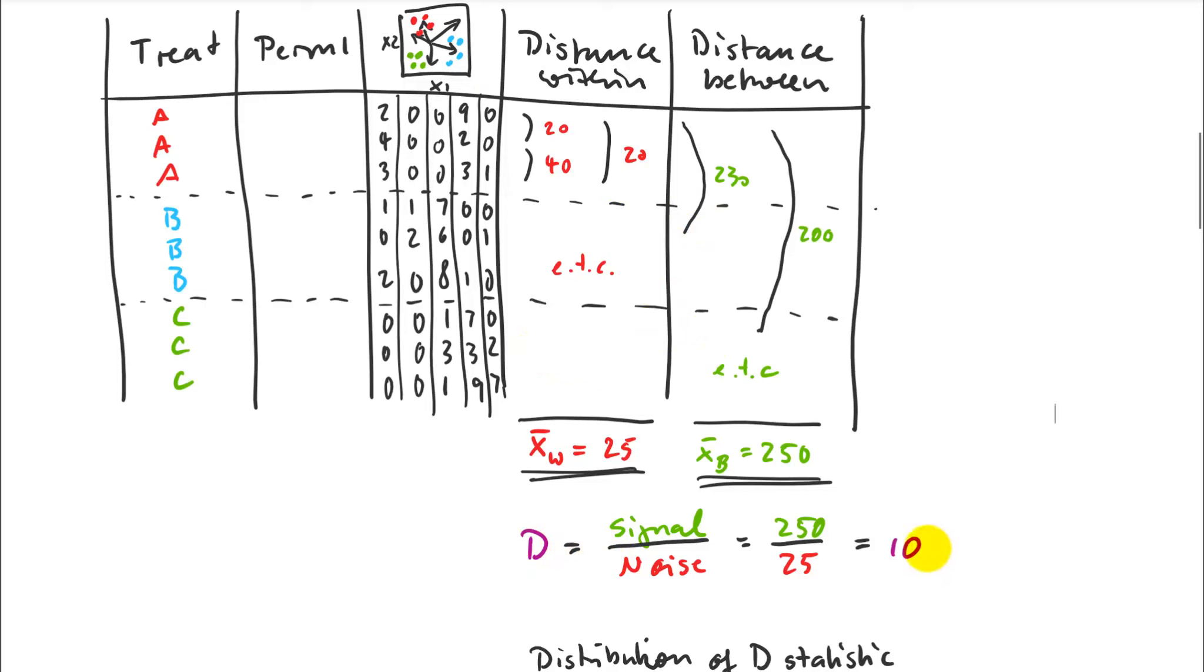Ultimately we want a p-value. We want to know what's the chance of getting a signal to noise ratio as big or bigger than 10 just by random chance. For that I need to know how would that D be distributed if there was indeed no treatment effect?